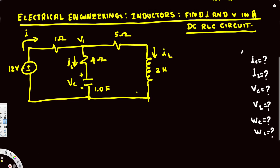We are looking at steady state, which is basically when the time is infinity — after a long time, what's going to happen to the circuit. When we have time at infinity, the energy is going to be fully stored in the capacitance, so the capacitor will act as an open. The current through the inductor will remain the same when the time is infinity.